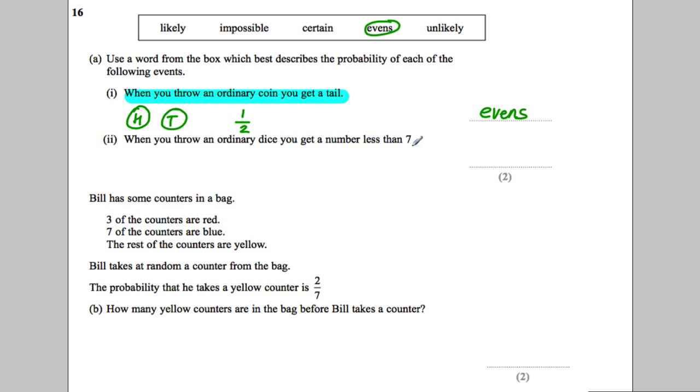When you throw an ordinary dice, you get a number less than seven. When you throw an ordinary dice, you either get a one, a two, a three, a four, a five, or a six.